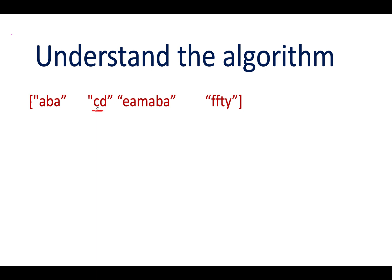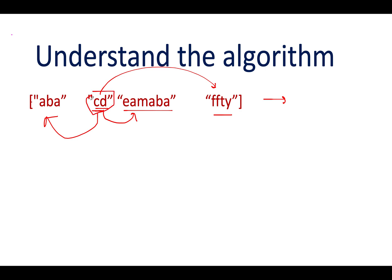Let's go with the next iteration. Next we have 'cd'. We compare 'cd' with 'aba' — there is no relation between them, so we move ahead. Next, 'cd' versus 'eamaaba' — 'cd' is not a subsequence of 'eamaaba', it's a happy case. Next, 'cd' versus 'ffdy' — no relationship between these two. Therefore, we found one particular string which is the longest uncommon subsequence of all the other strings. 'cd' becomes our string and the length becomes 2.